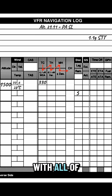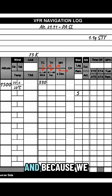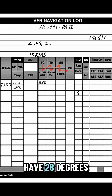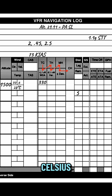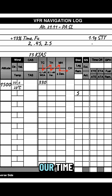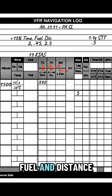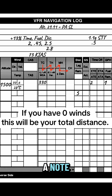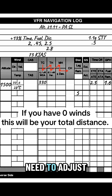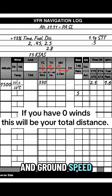So we'll start with all of our notes, and because we have 28 degrees Celsius, we have to add 13% to our time, fuel, and distance. For the distance, I'm going to make a note because I still need to adjust it for winds and ground speed.